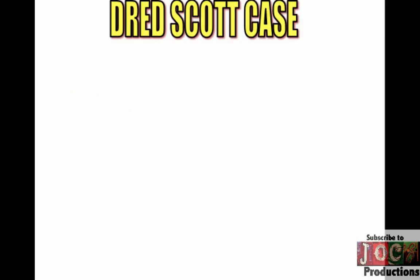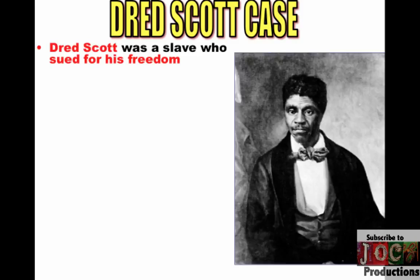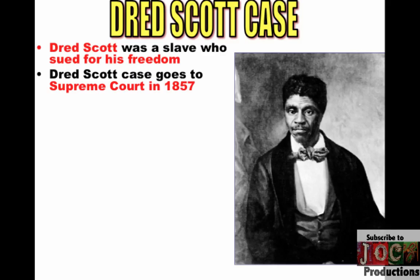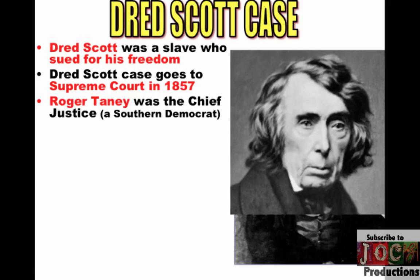Not too long after, the biggest crisis is the Dred Scott case. Dred Scott was a slave who sued for his freedom. He was a slave in Missouri, and his master took him to free territory in Wisconsin for about two years. He sues based upon that — he was in free soil, so therefore he's free. The case goes to the Supreme Court in 1857, and the Chief Justice, a Southern Democrat named Roger Taney, is the head of the court. The court is dominated by Southerners, and the court rules a couple of things in Dred Scott.